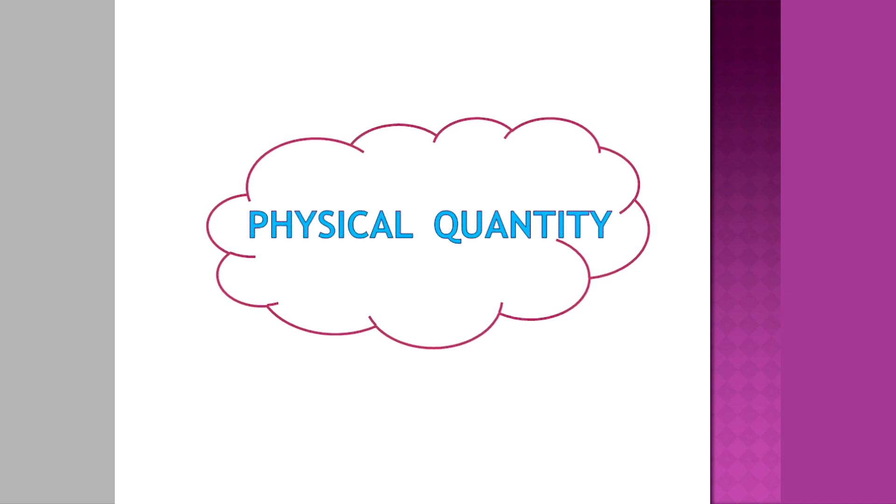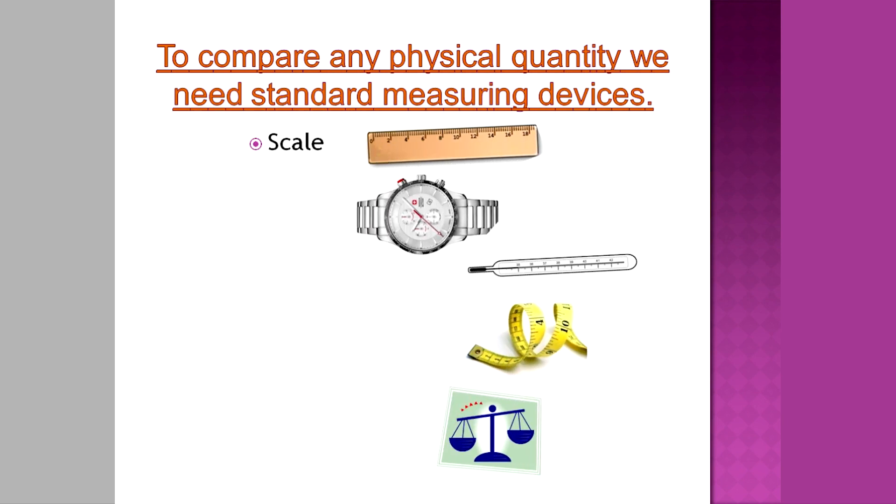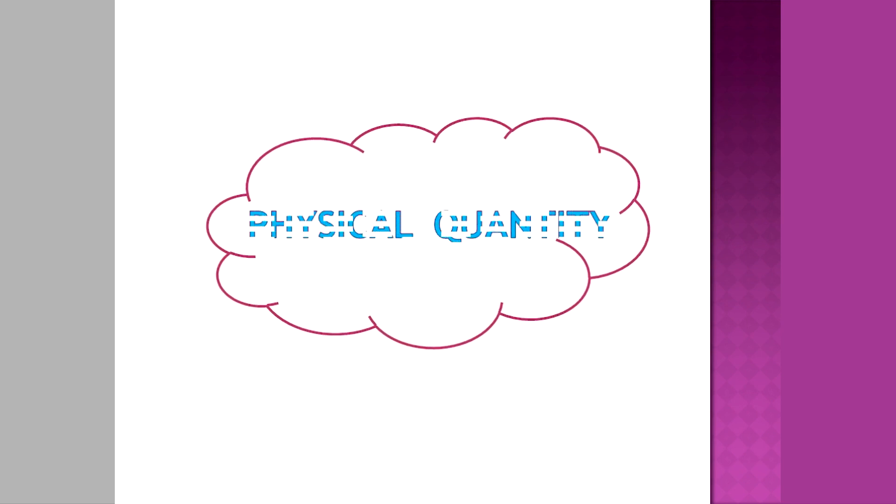For the measurement of any physical quantities, we use different methods and devices. We need devices like a scale to measure length, a watch to measure time, and a beam balance with standard weights to measure mass. We also have thermometers to measure temperature and so on.